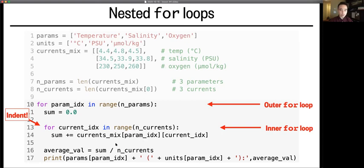Then once we've retrieved the value from currents_mix, we add it to the variable sum using the plus equals operator. And finally, once this two line long inner loop has looped three times covering each of the three currents,